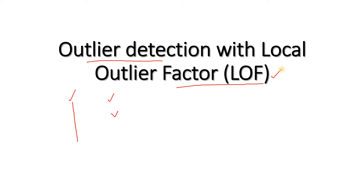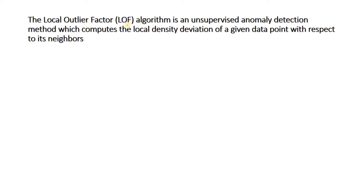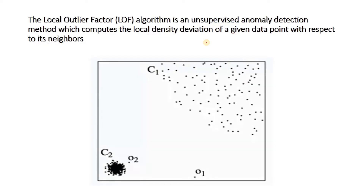Let's see how Local Outlier Factor, or LOF, helps to detect outliers. LOF is also an unsupervised machine learning algorithm, like Isolation Forest or Gaussian distribution - it does not need any labels in the training set indicating which are outliers and which are not. It is an unsupervised algorithm that can detect outliers in a training dataset that has no labels. The LOF algorithm is an unsupervised anomaly detection method which computes the local density deviation of a given point with respect to its neighbors.